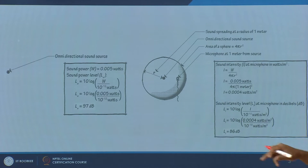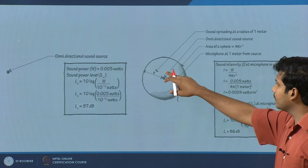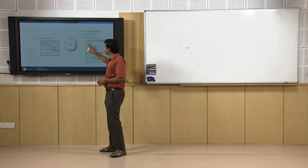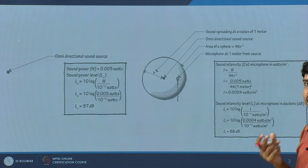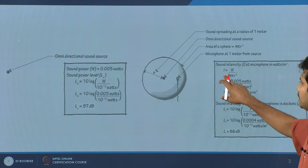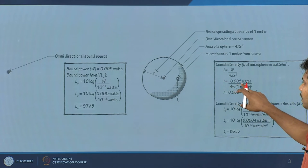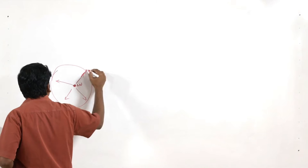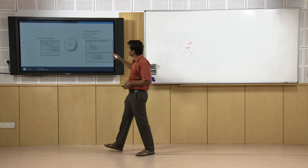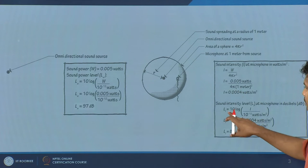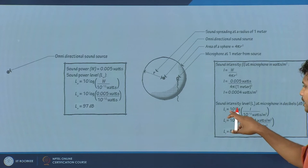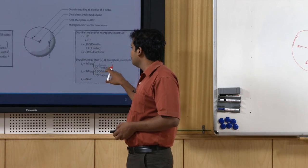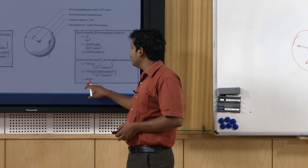To calculate intensity, I = W / 4πr². W_L is a source characteristic, giving us L_W. Taking the same source of 0.005 watts at a distance r = 1 meter, the intensity is 4 × 10⁻⁵ W/m². If you further want to find the intensity level, the reference is 10⁻¹² W/m², and you get a sound intensity level of 86 decibels. Levels are more important to us than the intensity values themselves.